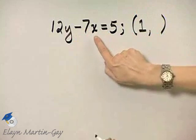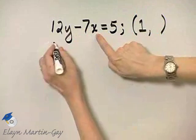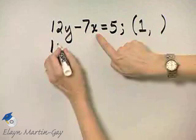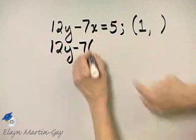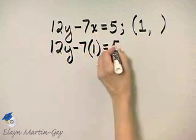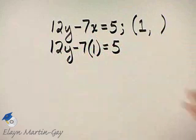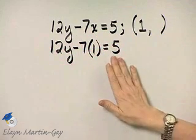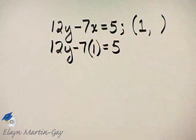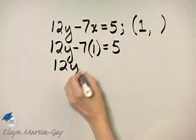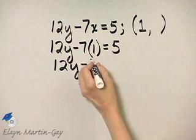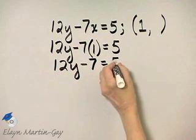So we will replace x with 1 and solve for y. So I have 12y minus 7 times x is 1 is equal to 5. Now notice the only unknown in this equation is y, so let's solve for y.